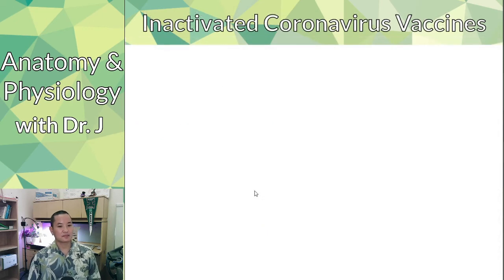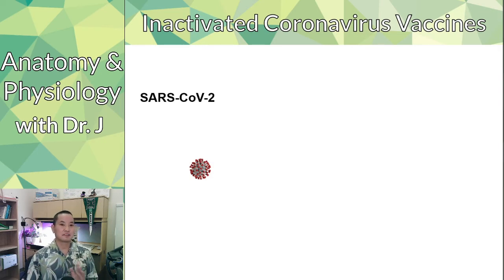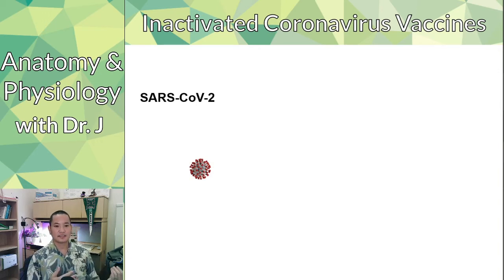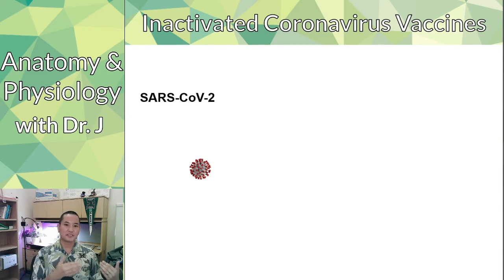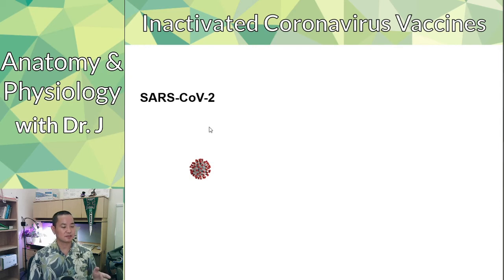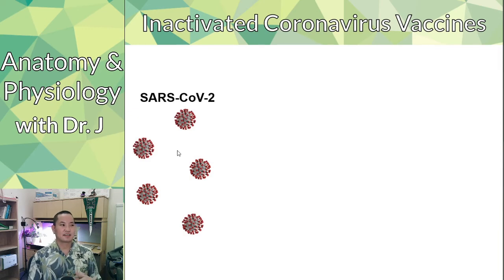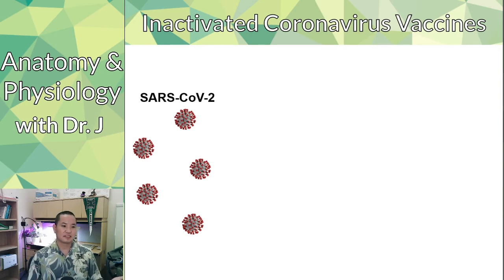Everyone calls it COVID-19 or just COVID, but there's an important distinction: SARS-CoV-2 is the actual virus, and COVID-19 is the respiratory condition caused by SARS-CoV-2. So how do you make an inactivated coronavirus vaccine? The details from the Chinese and Indian biotech companies aren't fully published, so what follows is the best understanding of how it's done.